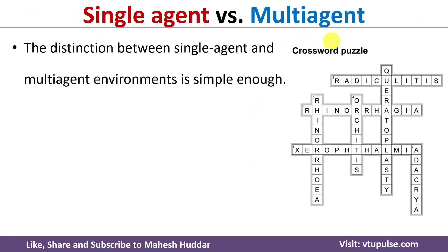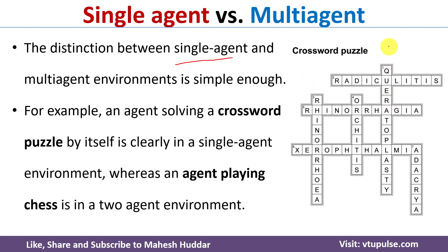The next type of environment is single agent versus multi-agent. If an AI system has a single agent to solve a given problem, it is called single agent. If there are two or more agents in a given AI problem, it is called multi-agent. Consider a crossword puzzle — only a single agent is needed to solve it, so it is a single agent problem. But in chess, two agents are required to play the game, so it is called a multi-agent environment.